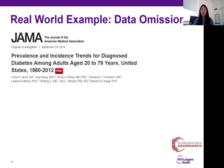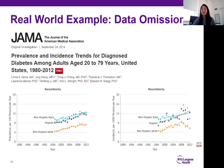I wanted to show a couple of examples of how this actually looks in the real world. The first is a paper published in JAMA looking at prevalence and incidence trends for diabetes. When you look at the graph stratified by race and ethnicity, you can see that there are Blacks, Hispanics, and whites on the graph, but Asians are missing. This is something you will often see in the literature when you're trying to dig deeper and figure out what data actually exists — you'll see this absence of data on Asian American and Native Hawaiian Pacific Islanders.